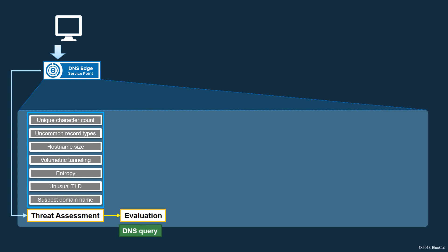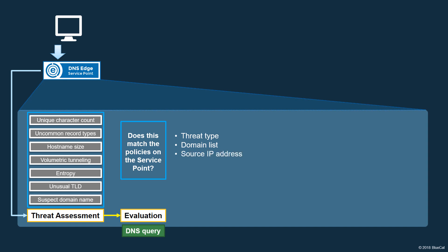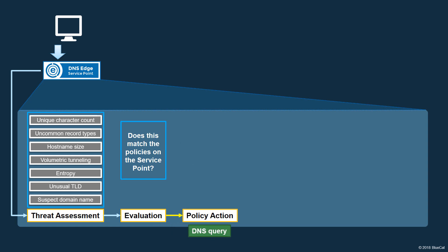Next, the Service Point compares the query against any locally enforced policies. Policies can be defined based on a variety of criteria, including threat types, lists of domains for which policy actions should be taken, or the source IP address of the query. Policies can also be set to limit queries to specific times of day. If the query matches the policy settings, then the Service Point acts upon the query. The Policy Engine contains four configurable policy actions.